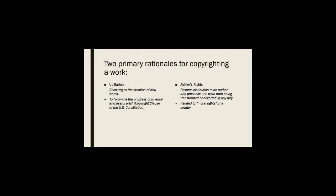According to copyright law, there are two rationales for copyright. The first is utilitarian and encourages new works — it is like a financial incentive to promote the progress of science and the useful arts. The other is author's rights: the desire to ensure that attribution is paid to the creator, also called right of paternity. It also ensures that the work is kept in its original form without any distortions or transformations, also called the right to protect the work's integrity.